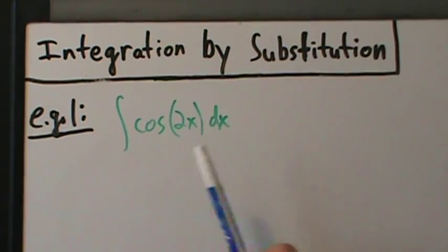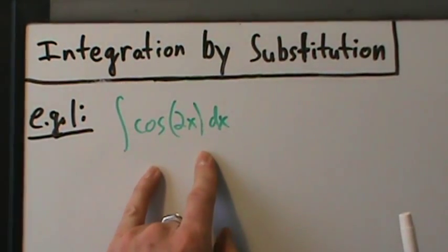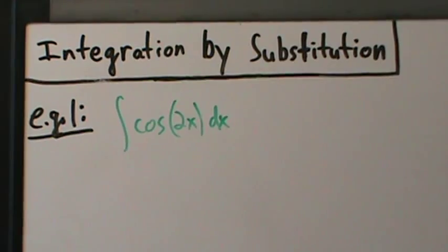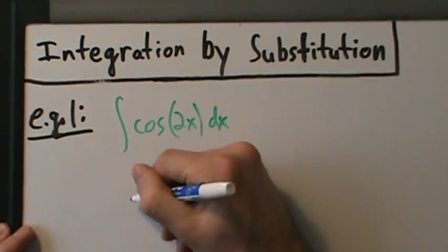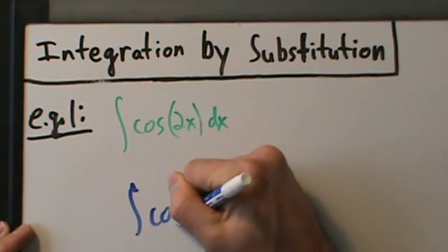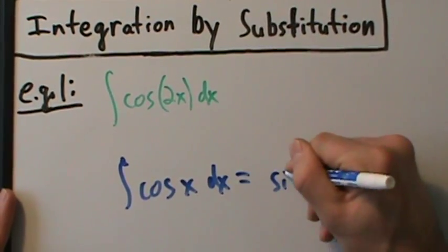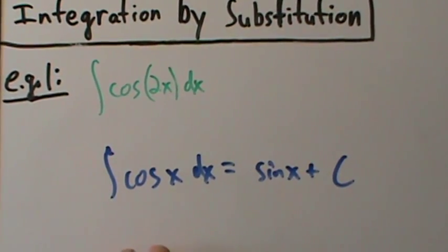For integration by substitution, let's talk about that here. If you want to integrate something like cosine of 2x, that's probably one of the simplest examples we could have, but it's a good one to start with. What if we didn't have the 2? The integral of cosine of x dx would just be sine of x plus c. We know that.